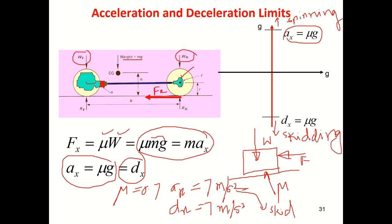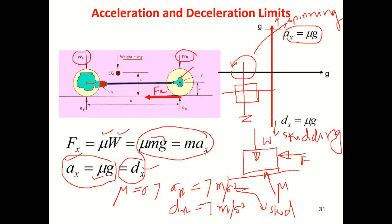Please note there is a difference between spinning and skidding. Spinning: if you look at the front view of the vehicle with a Z-axis and Y-axis, the vehicle will spin around the Z-axis — that is spinning. Skidding is simply sliding — the vehicle slides laterally. So there is a limit. If you want to increase acceleration or deceleration performance, increase the mu value. Mu can be greater than one — it can be up to two — depending on the kind of road and tire material.